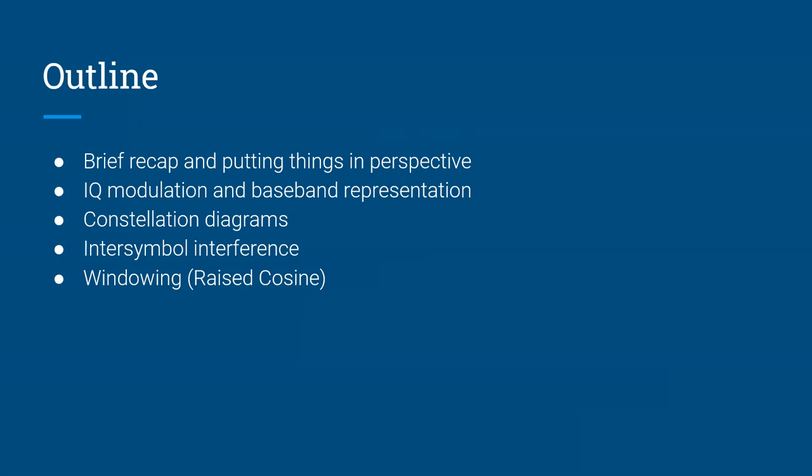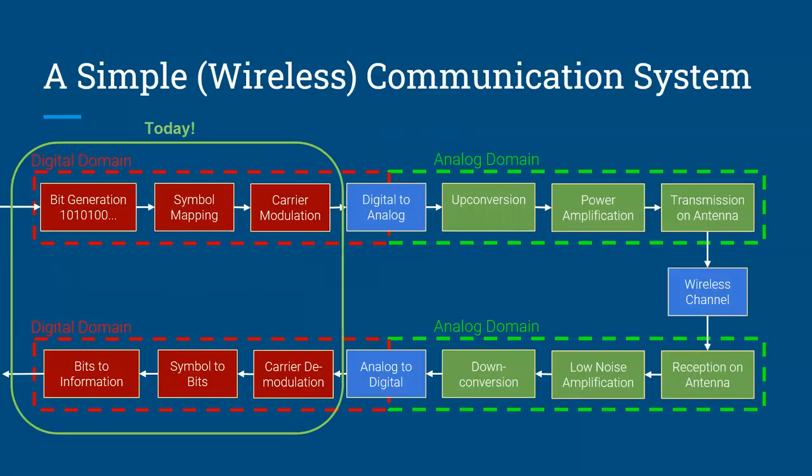We'll talk about constellation diagrams, as well as inter-symbol interference, which is what happens when you try to send data over a band-limited channel. To mitigate that, we'll look at the Nyquist inter-symbol interference criterion, and that's where we apply windowing.